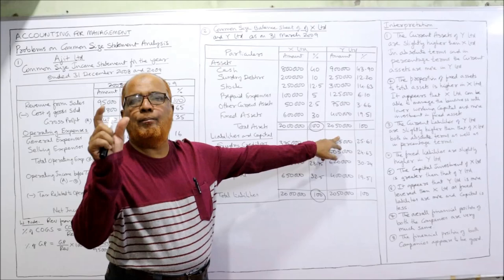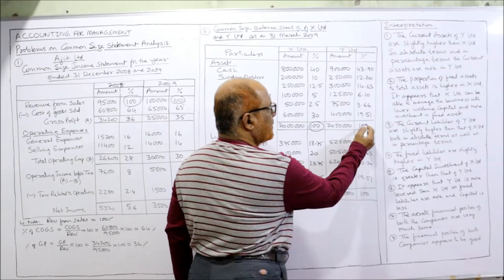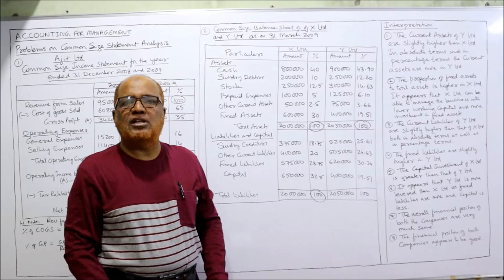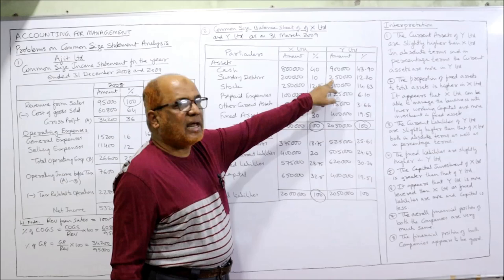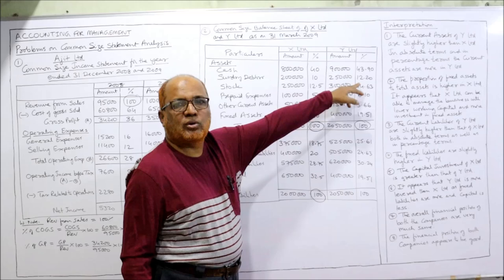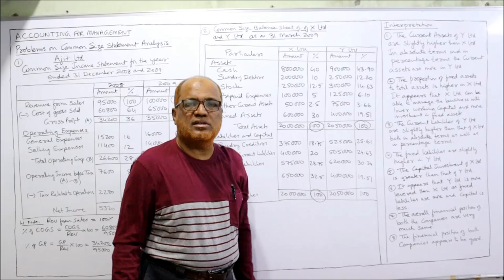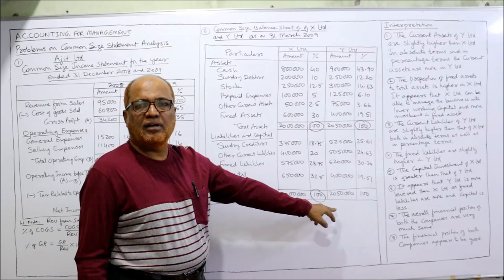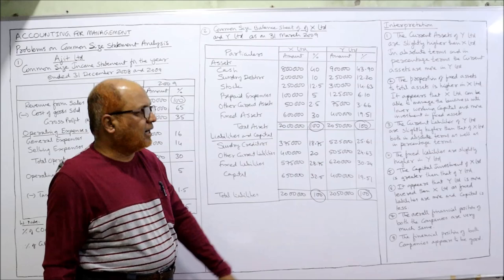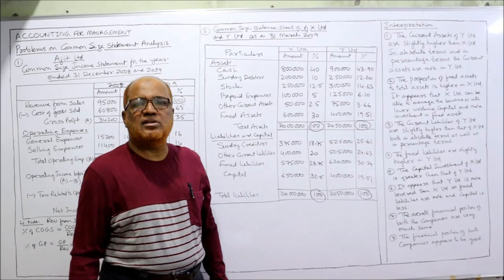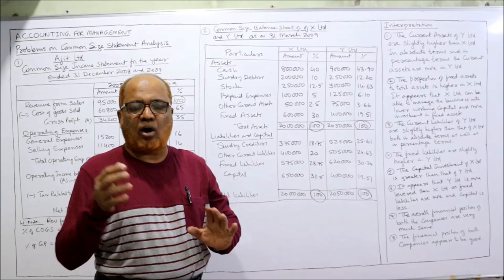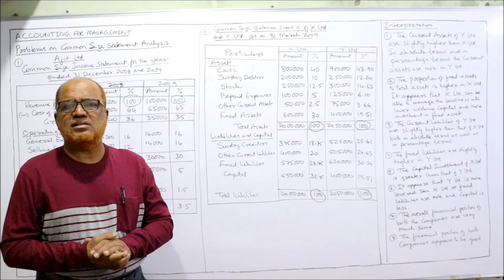For Y Limited, total assets are 20 lakh 50,000, which is the base kept in the denominator at 100 percent. Take all individual values in the numerator with the base in the denominator. 9 lakh divided by 20 lakh 50,000 into 100 equals 43.9; 2 lakh 50,000 divided by 20 lakh 50,000 into 100 equals 12.2; 3 lakh divided by 20 lakh 50,000 into 100 equals 14.6. The same method applies for liabilities — this is the complete method of making the common size balance sheet.